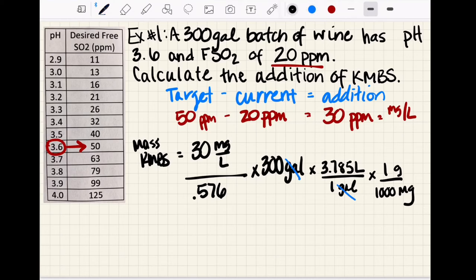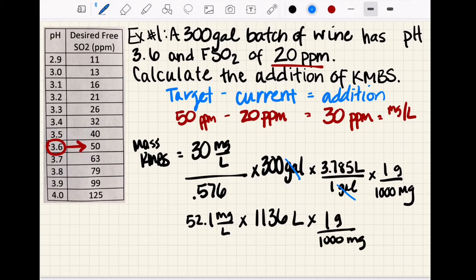30 milligrams per liter divided by 0.576 will give us 52.1 milligrams per liter, and 300 times 3.785 will give us 1136 liters times one gram over one thousand milligrams. We'll be able to cancel out milligrams, we'll be able to cancel out liters, and our answer is going to end up in grams of KMBS. 52.1 times 1136 divided by 1000 gives us 59.1 grams of KMBS to add.